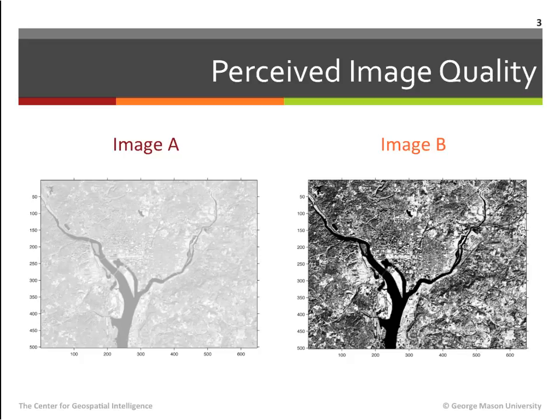Our conclusion from this example is therefore that the relative abundance of different gray levels has a direct impact on the quality of the image as perceived by the human visual system. But how can we quantify and explore the abundance of different gray levels in a given image? How can we identify situations where the perceived image quality is low? Furthermore, how can we manipulate the abundance of different gray levels to improve overall image quality? The answer to these questions lies in the image histogram.